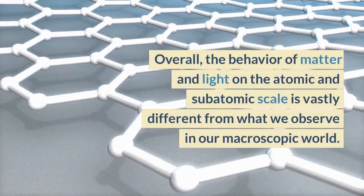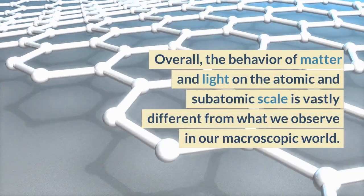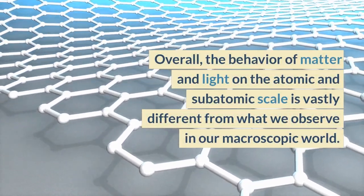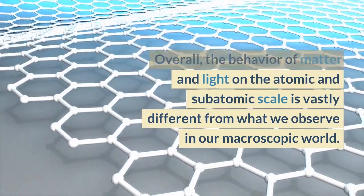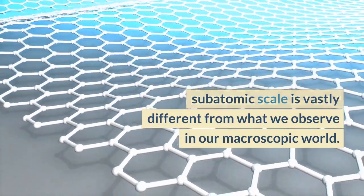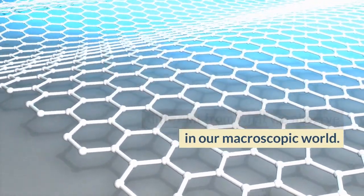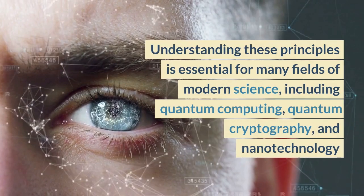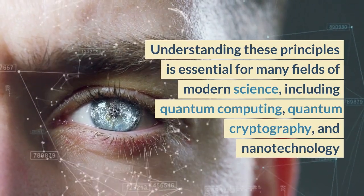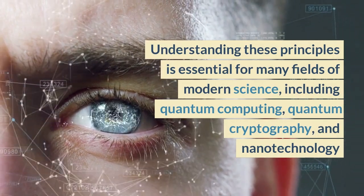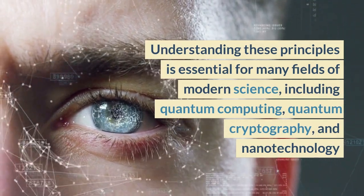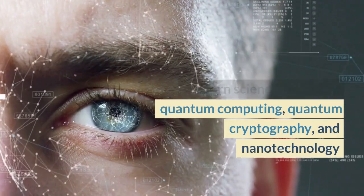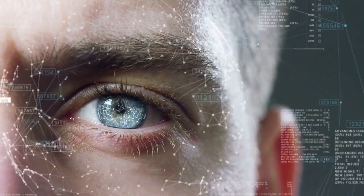Overall, the behavior of matter and light on the atomic and subatomic scale is vastly different from what we observe in our macroscopic world. Understanding these principles is essential for many fields of modern science, including quantum computing, quantum cryptography, and nanotechnology.